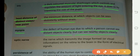Optic nerve: the nerve which transmits the image formed, or visual information on the retina, to the brain in the form of electrical signals.